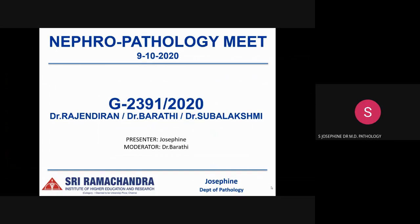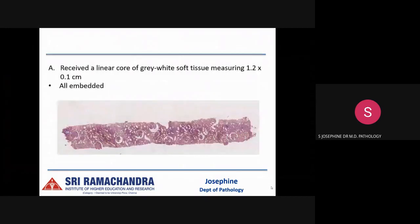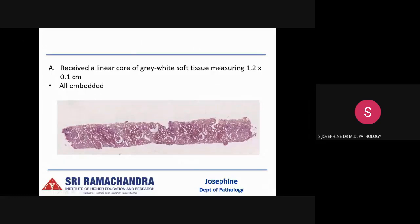Good morning all. With the above-mentioned history, we received a renal biopsy. We received a linear core of grey-white soft tissue measuring 1.2 by 0.1 cm, which was all embedded. This is the whole mount view, and we can identify around 11 glomeruli in this linear core.